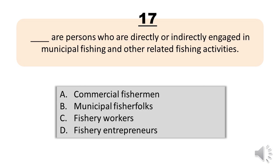Number 17. Blank are persons who are directly or indirectly engaged in municipal fishing and other related fishing activities. A. Commercial fishermen. B. Municipal fisher folks. C. Fishery workers. D. Fishery entrepreneurs. The correct answer is Letter B. Municipal fisher folks.